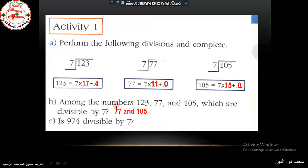So he asked us, among the numbers 123, 77, and 105, which are divisible by 7? If we look at the equalities here, we say that it's divisible by 7 when the remainder is 0. And in the last two cases, the remainder is 0. So 77 and 105 are divisible by 7, while 123 is not.